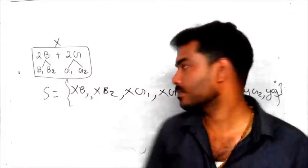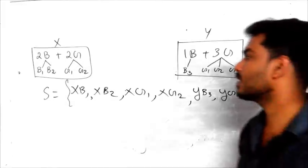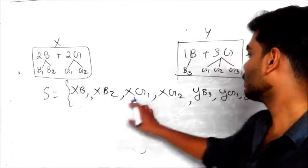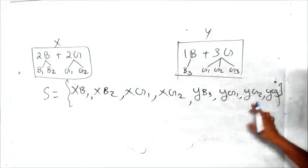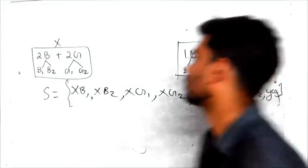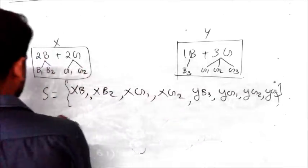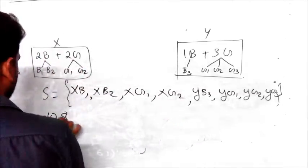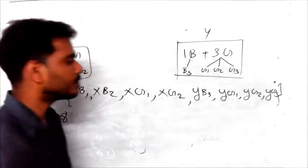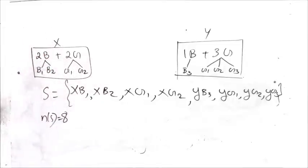How many? One, two, three — one, two, three. Eight. Eight. You have 8 students total as possible outcomes.